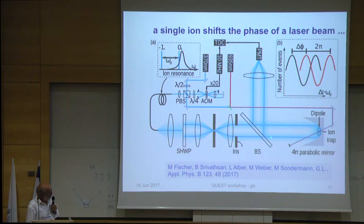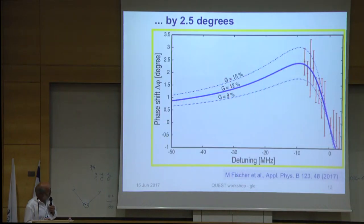Then out comes here the carrier and a 400 megahertz sideband. The sideband can be close to the resonance of the ion and we can shift this a bit. As a reference, we have the carrier, which is 400 megahertz away. Then we can look at the beat and compare the phase shift of the beat. The optical phase shift survives when you mix it down to radio frequencies. This is the phase shift that we measure.